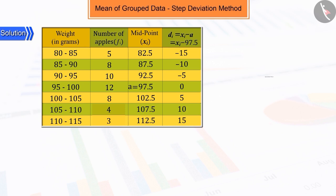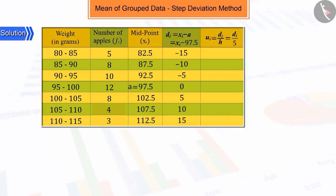We calculate the ui, that is divide the di by the class interval h, which is 5, and form a table.